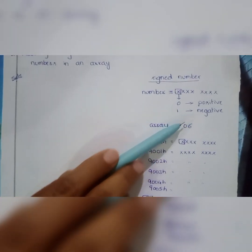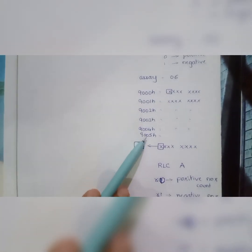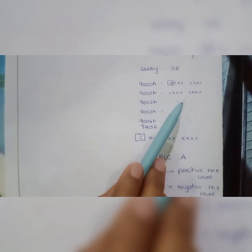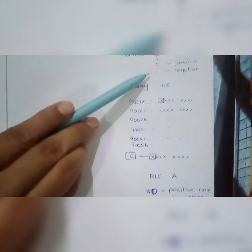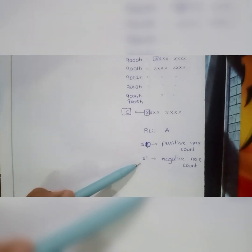We will store the results in registers R0 and R1. The count of positive numbers will be stored in R0 and the count of negative numbers in R1. So the logic is: for each of the 6 numbers, take the number, rotate it left through carry, check the carry bit — if 0, it is positive and we increment R0; if 1, it is negative and we increment R1. Based on this approach, we will write the assembly program.